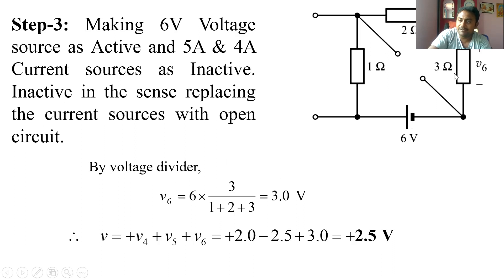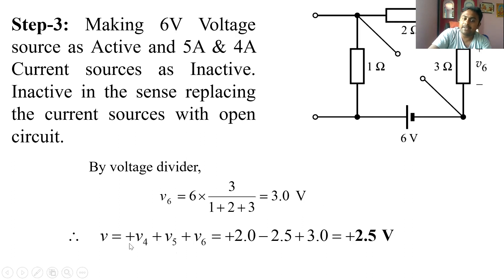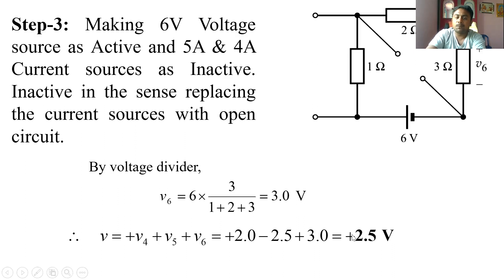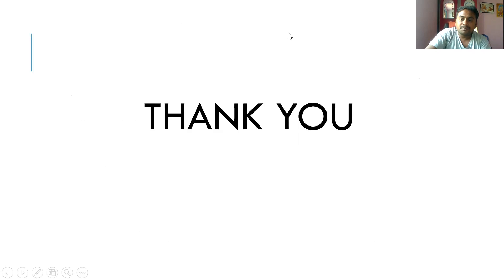In Step 3, the 6 V voltage source is active and both current sources are replaced with open circuits. The three resistances form a single series loop. Applying the voltage division rule: V3 = 6 × (same branch resistance 3) / (1 + 2 + 3) = 3 V. By the Superposition Theorem, total voltage = V1 + V2 + V3 = 2 − 2.5 + 3 = 2.5 V. Thank you — please post any queries about the Superposition Theorem in the comment box. Have a nice day!